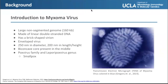A brief introduction to myxoma virus and its genome and structure. Myxoma virus has a large non-segmented genome of 160 kilobases and is made of linear double-stranded DNA. Structurally, it has a brick-shaped virion and is enveloped, with 20 nanometers in diameter and 200 nanometers in length and height. Myxoma virus also has a biconcave core present in the middle, and it is part of the poxvirus family and Leporapoxvirus genus.